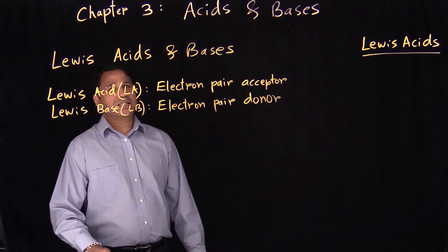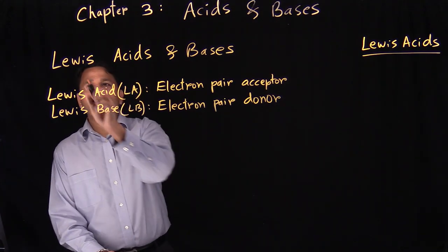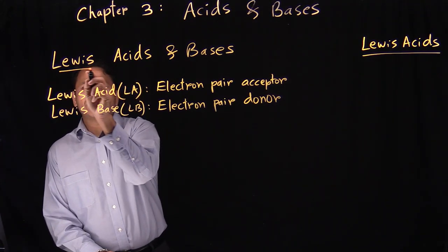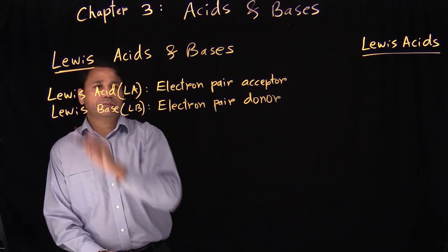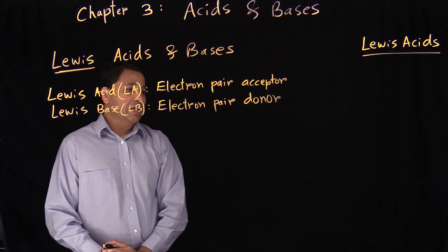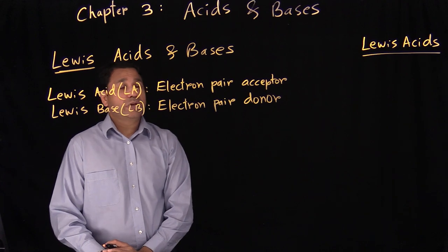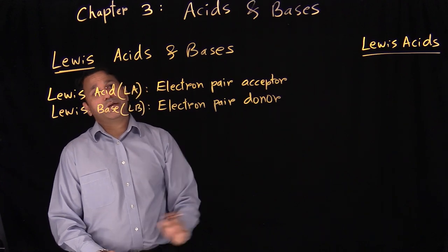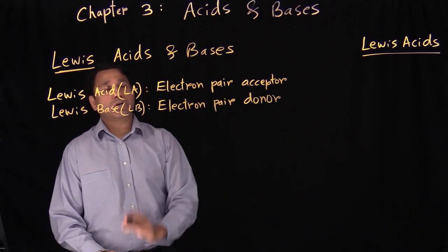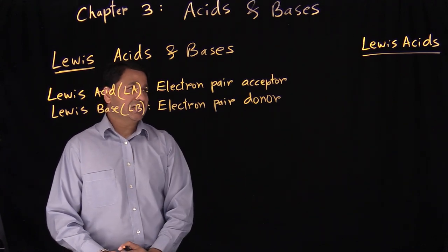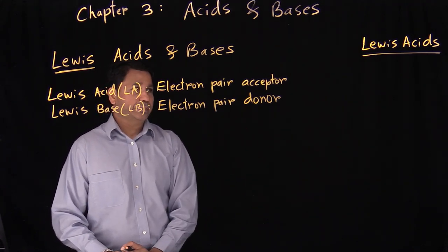The second type of acids and bases are Lewis acids and bases. Until now, whatever we were doing was based on Bronsted acids and bases.